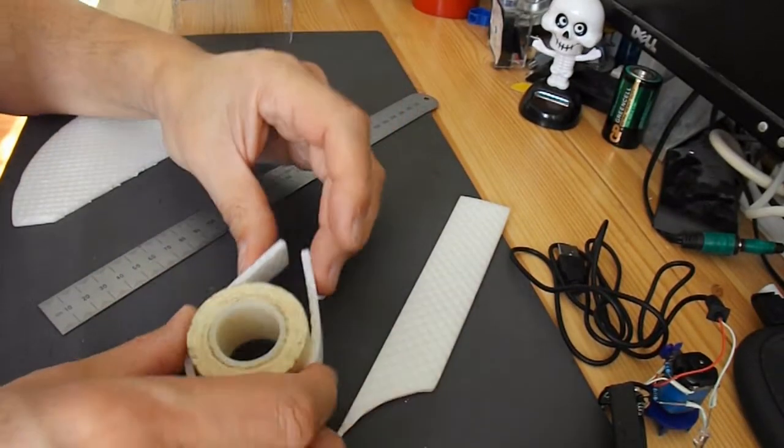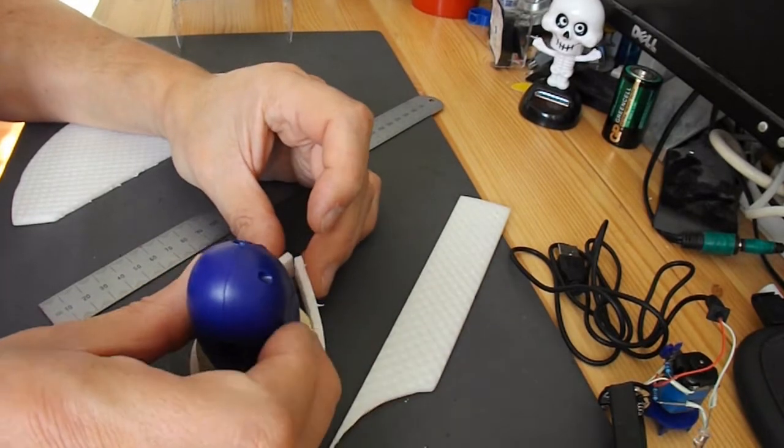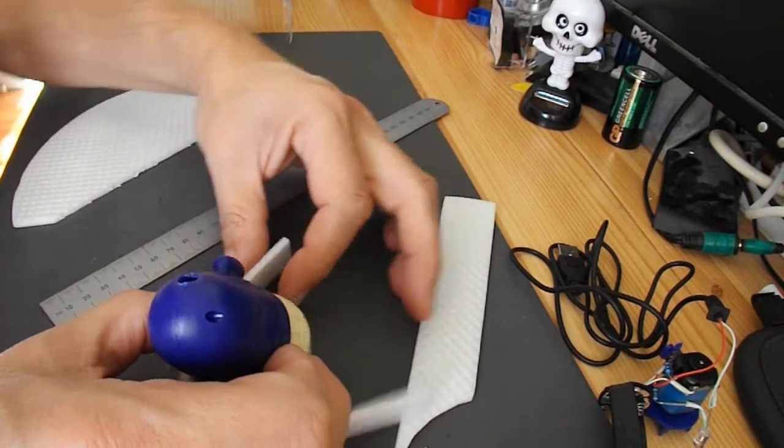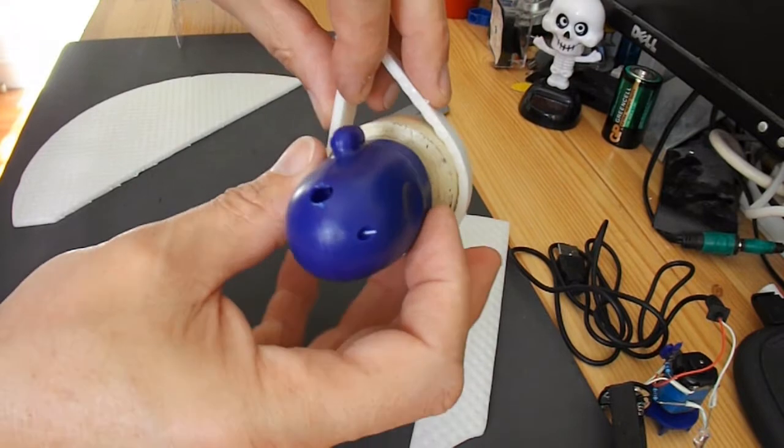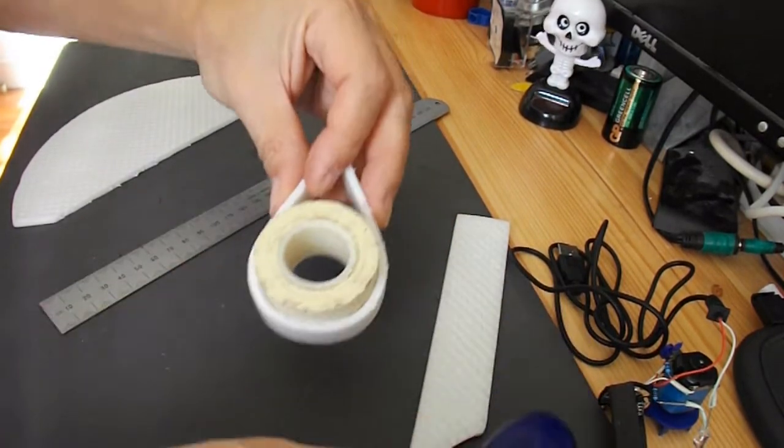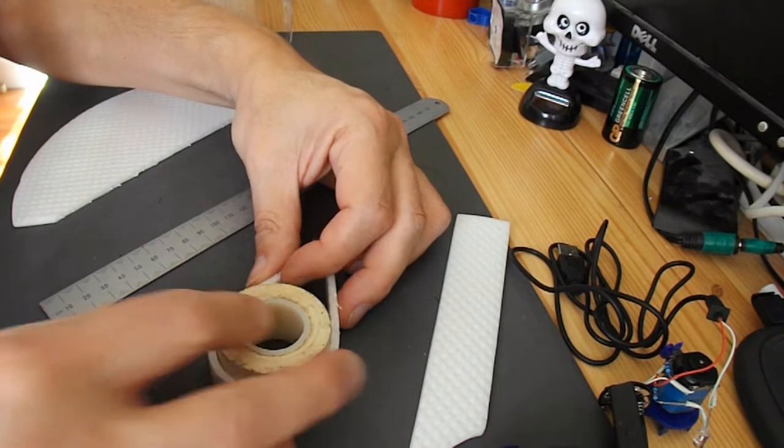I think that roll of tape will be about the right size, to give me a gap all the way round. So I can use that as a former.